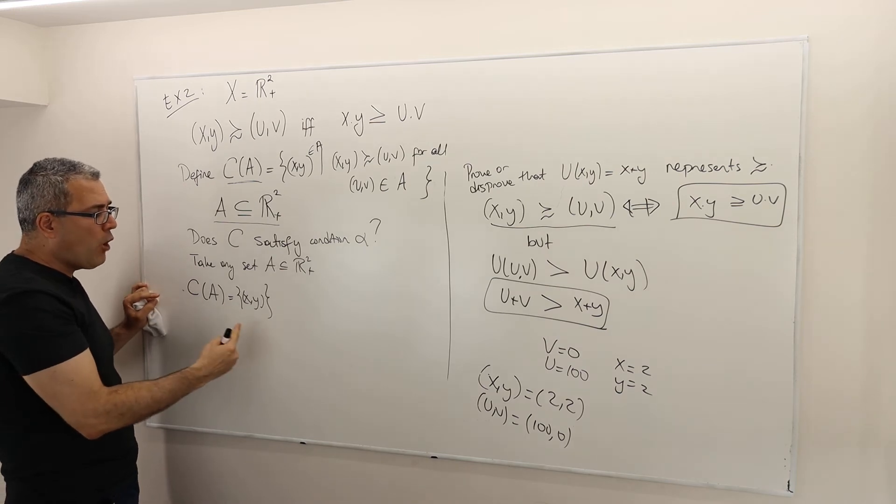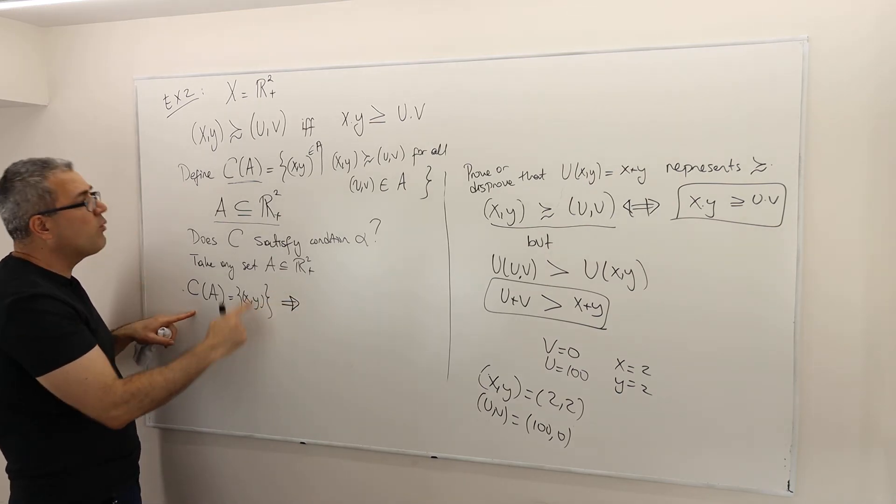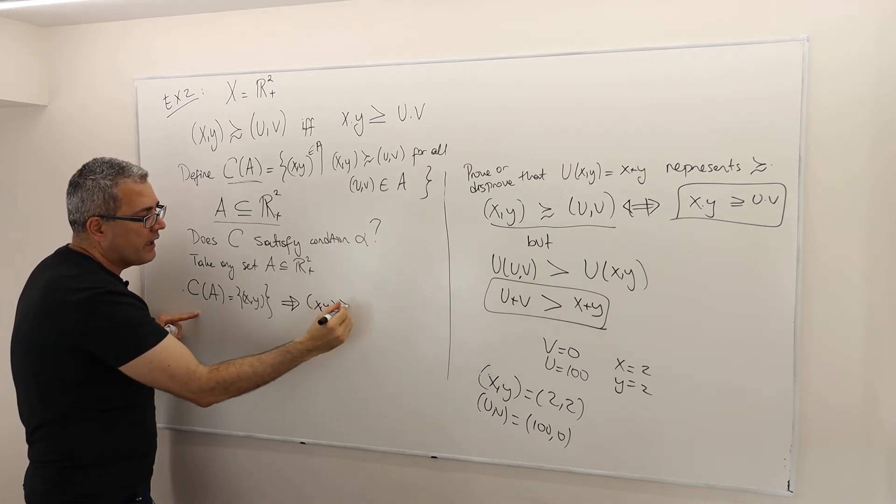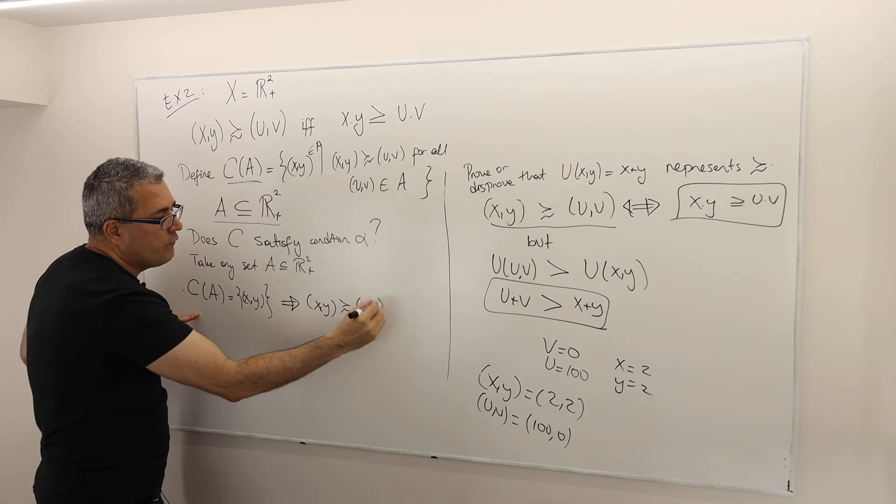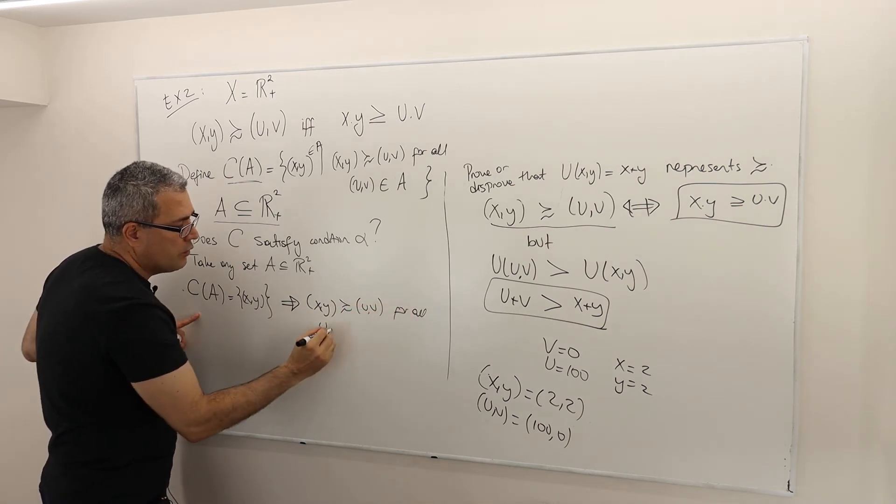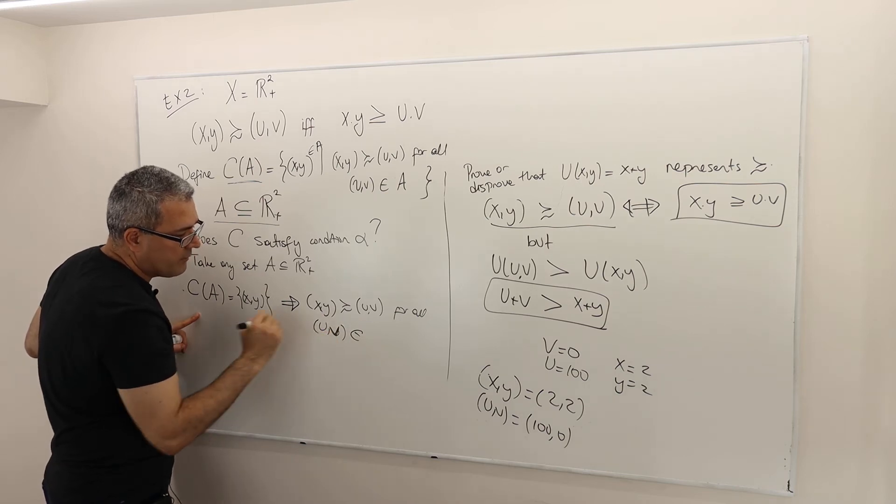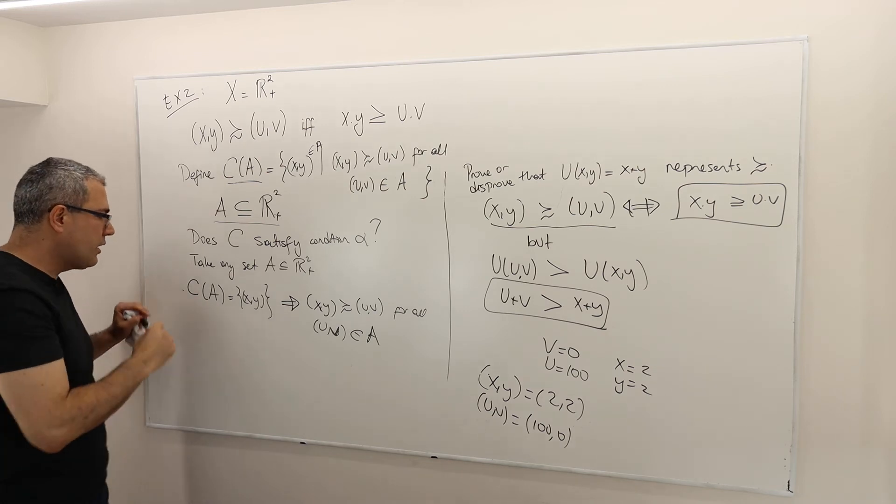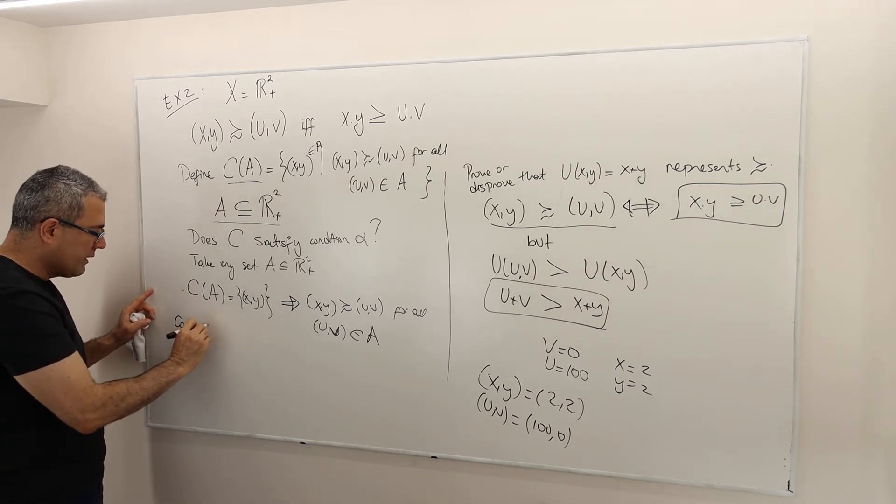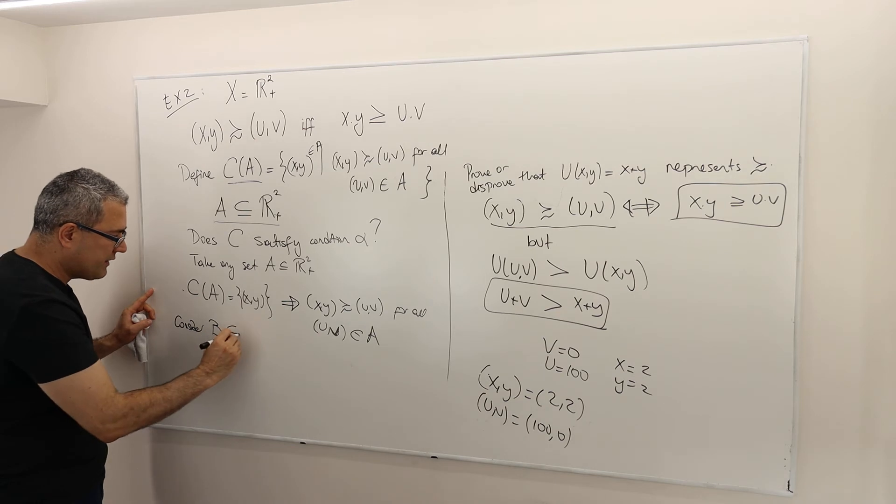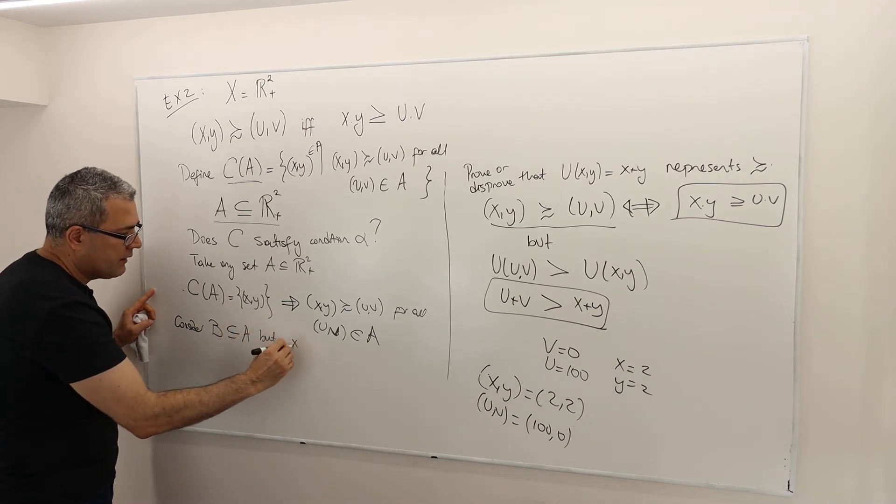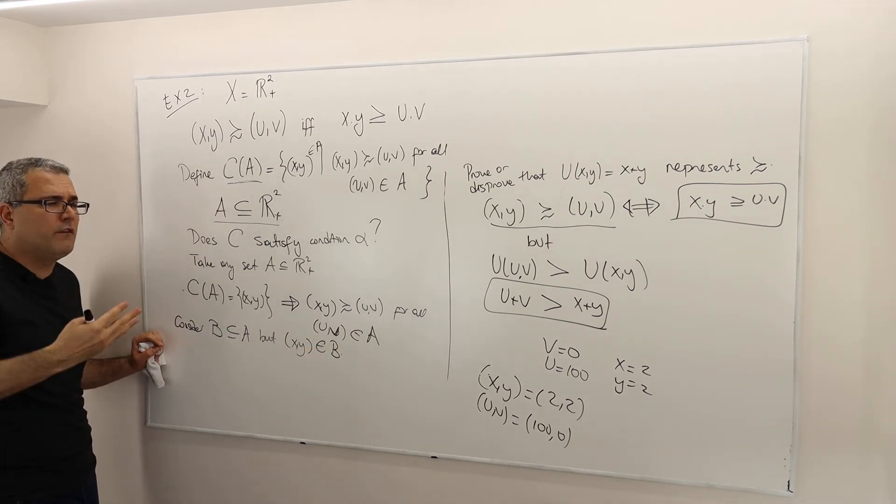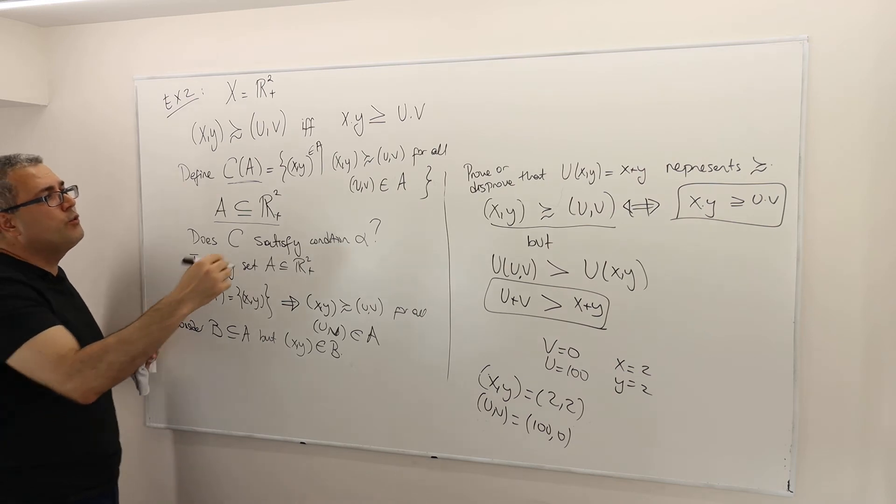So the question is, what do I know from this? Well, remember, according to the definition of this choice behavior, XY is at least as good as UV for all UV in my set A, right? Okay, so now consider some set B, which is subset of A, but this XY is an element of B.